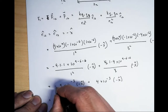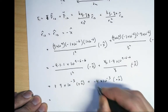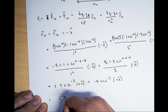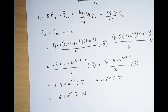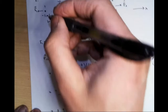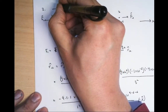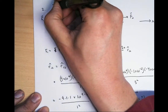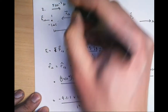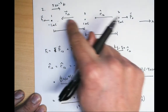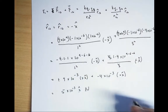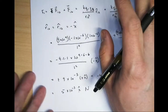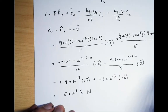Putting these together — the first term has a minus sign and the second a plus sign, giving a net 5×10⁻³ in the x-hat direction, in newtons. So this force is attractive toward the two other charges. That's basically problem 2. I'm going to let you guys do the second part on your own.